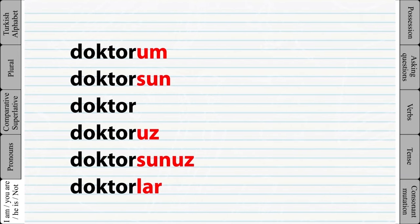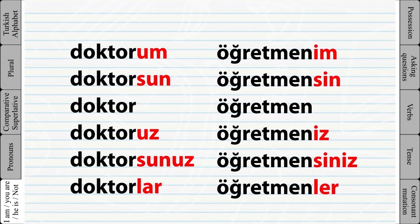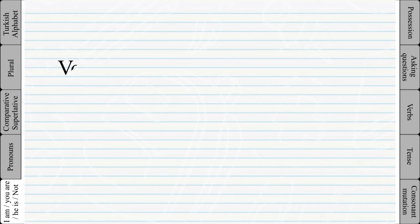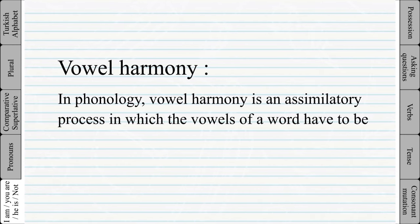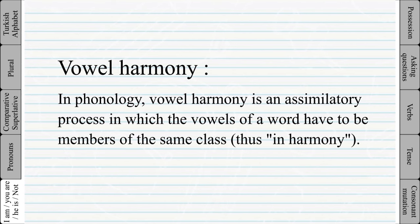Let's look at another example. Notice how the vowel changed. The reason we use a different vowel is because of something in Turkish called vowel harmony. The vowel harmony in phonology is an assimilatory process in which the vowels of a word have to be members of the same class.